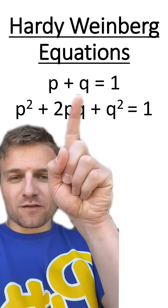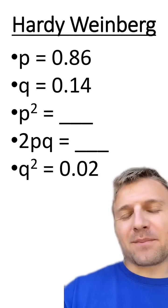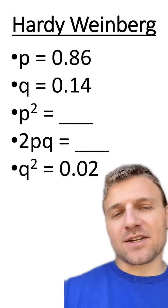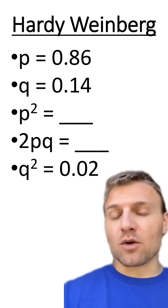So in this equation, something plus q, which is 0.14, equals 1. So if we do a little math, we're going to find out that p is going to equal 0.86. All I did there was take 1 minus 0.14 and found out that p is going to equal the remainder, or 0.86.